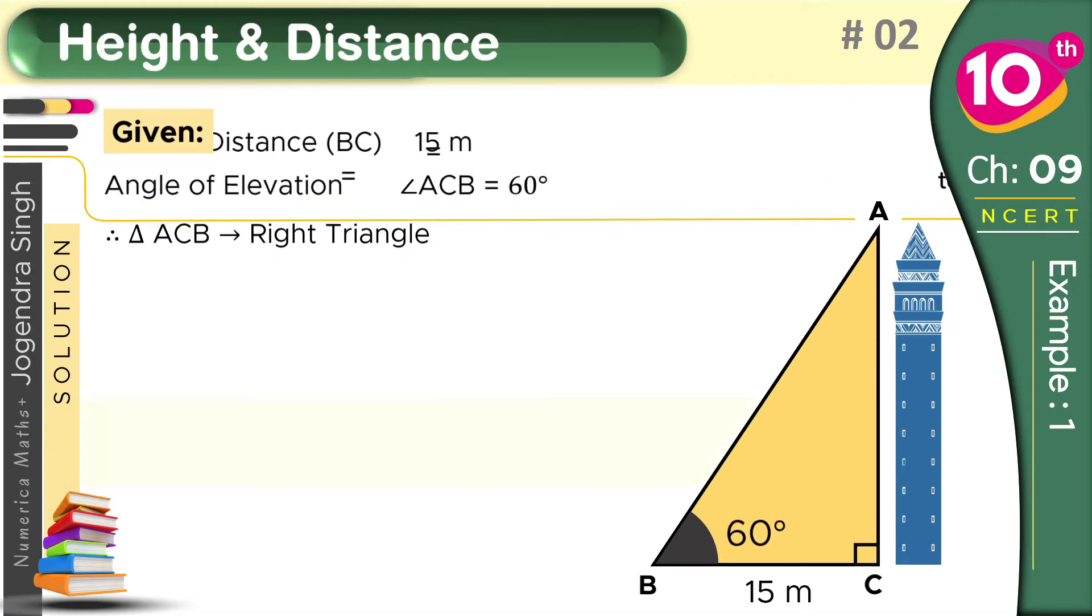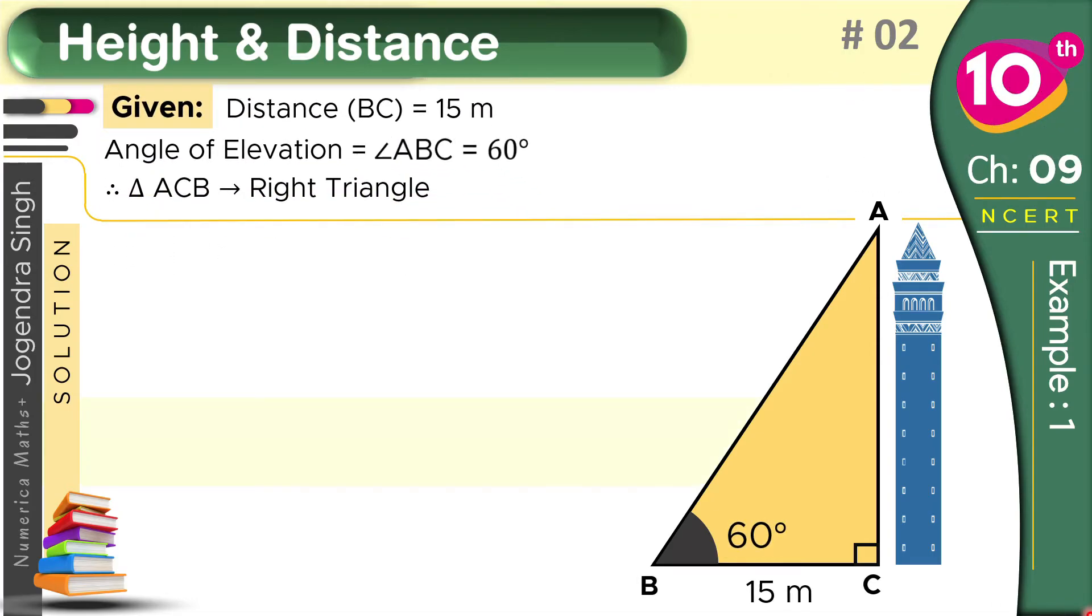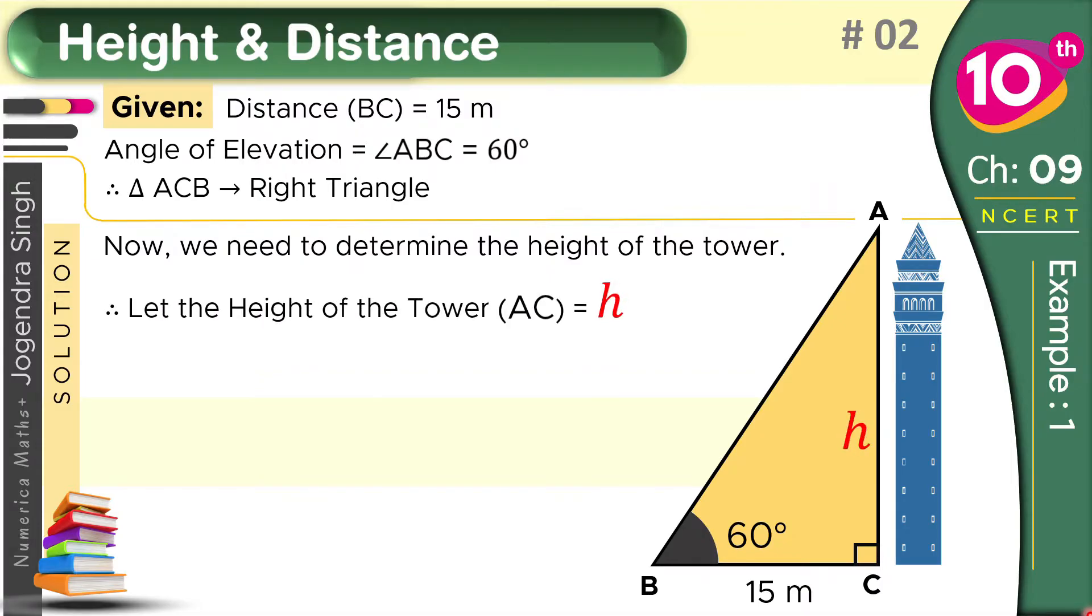Just wipe out all the extra things from here. Now what do we have? Now we need to determine the height of the tower. We need the height of this tower, which is AC. So we give this height a variable, which is: let the height of the tower be h.